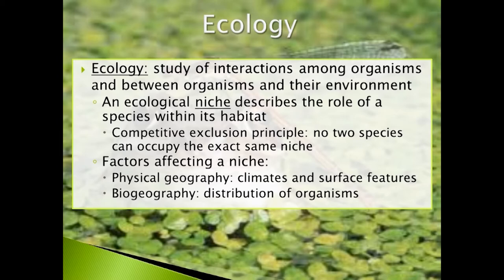Some species in an environment will have a lot of overlap in their niche. For example, a chipmunk and a squirrel have a lot of similarities — they eat similar types of food, have a similar body plan, and have similar predators. However, they are not exactly the same in their niche. A squirrel tends to utilize and inhabit trees more frequently than a chipmunk, which tends to be more of a rock-dwelling, ground-dwelling organism.